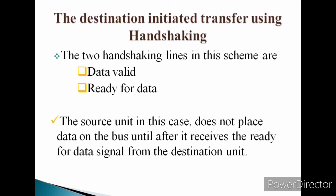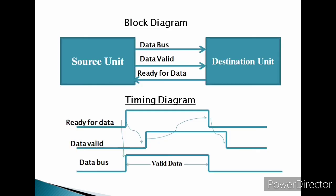The destination-initiated transfer using handshaking. In this scheme, it has two handshaking lines which are data valid and ready for data. The source unit in this case does not place data on the bus until after it receives the ready for data signal from the destination unit.